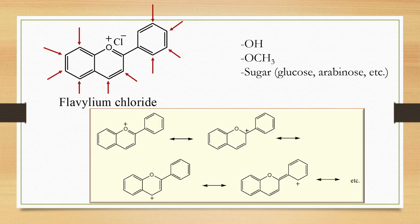You must be wondering why these anthocyanins are colored in nature. This is because of the presence of a high degree of conjugation. You can see that a lot of structures of anthocyanins are in resonance with each other because of a lot of conjugation.